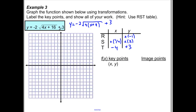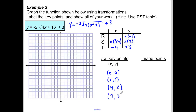The key points for the radical function are (0,0), (1,1), (4,2), and optionally (9,3). These will all get mapped to their new image points based on the RST chart.